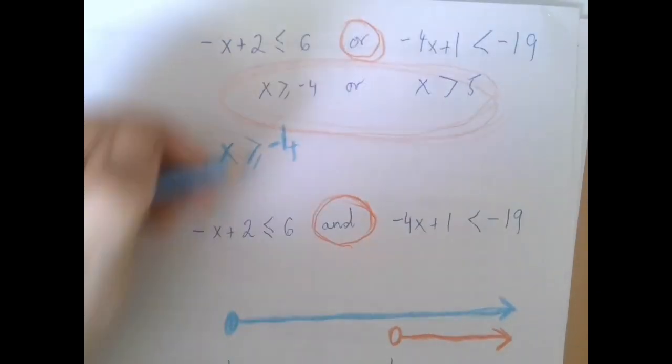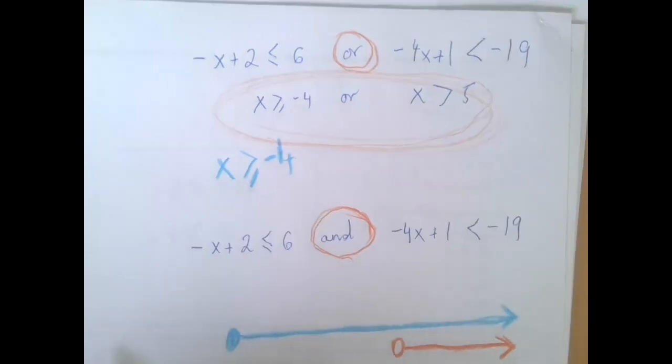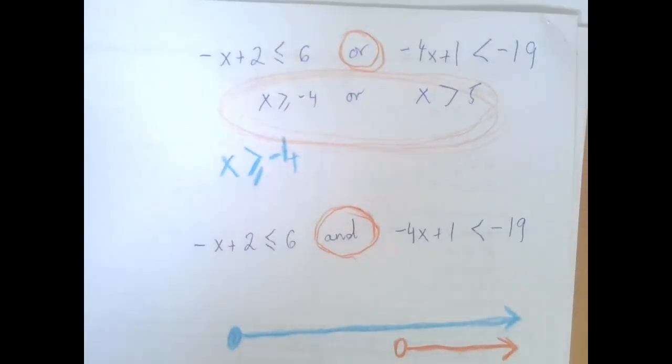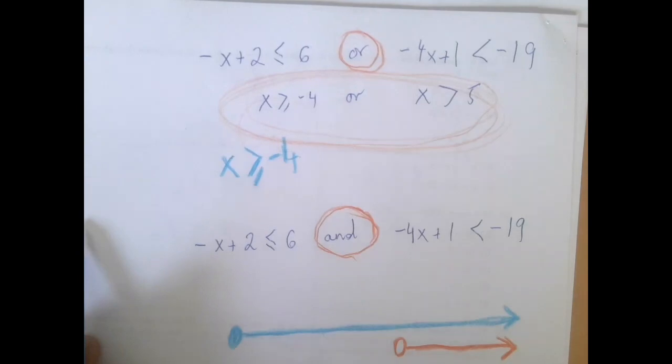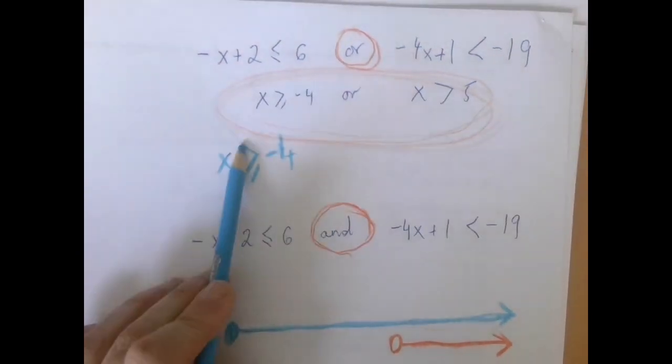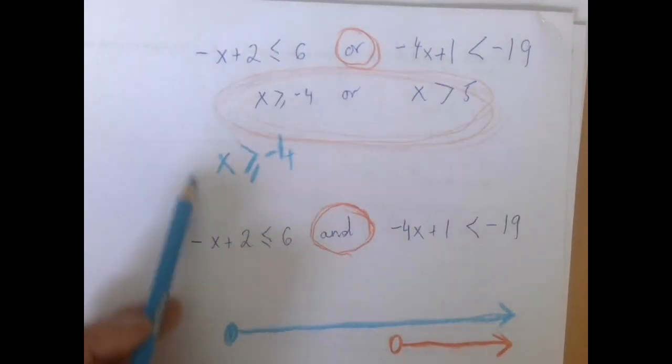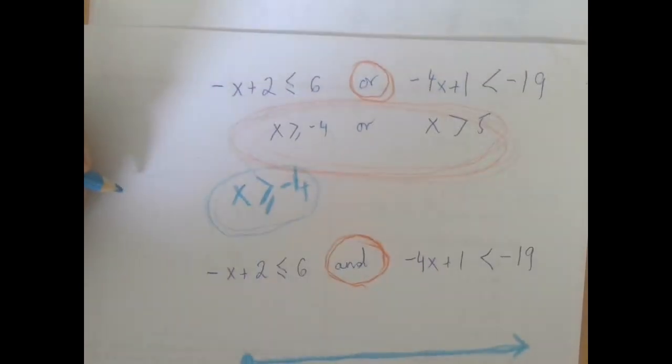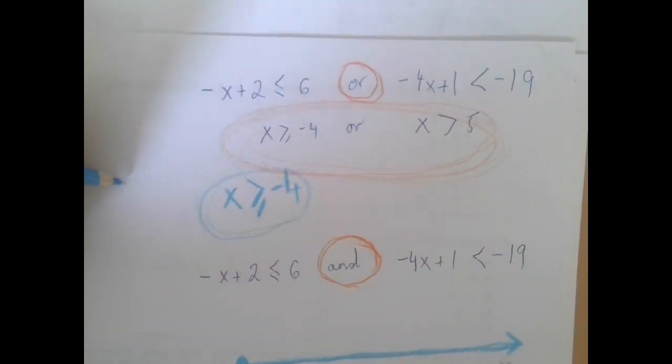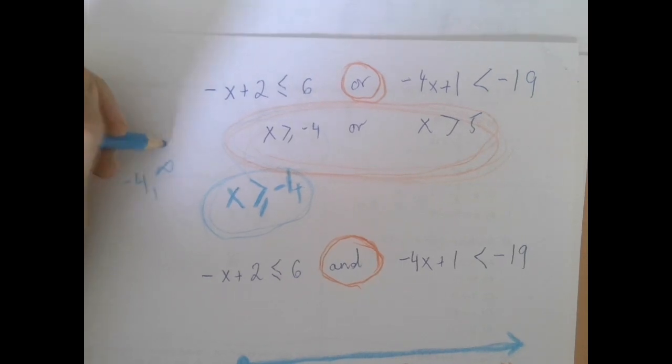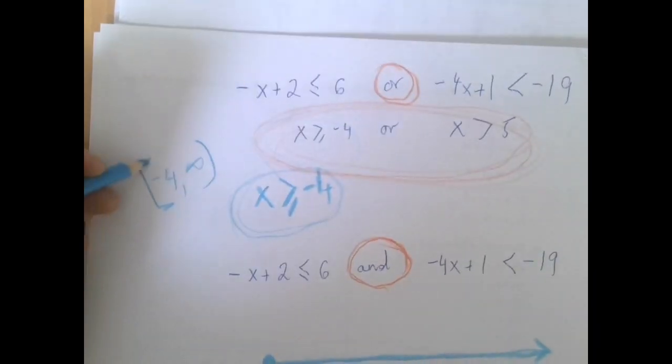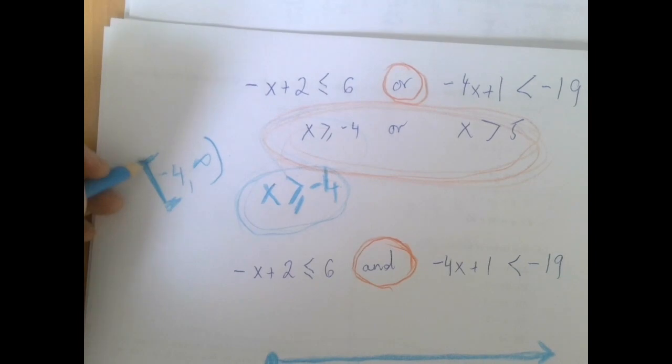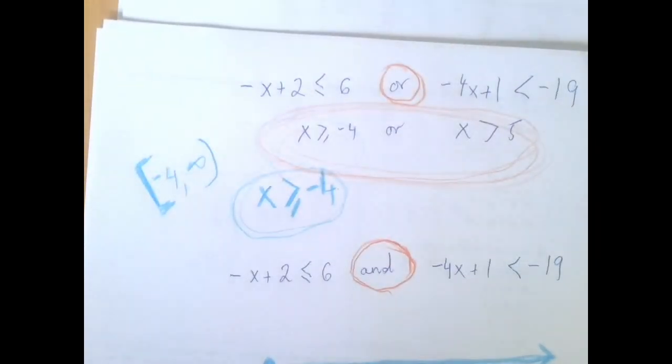So this compound inequality can be simplified into X is greater than or equal to negative 4. And if you think about it, if X is greater than or equal to negative 4 and on, this will always be true. So this is the answer for, as an interval, it's X has to be greater. So negative 4, infinity. And because equality is allowed, we use the bracket here.